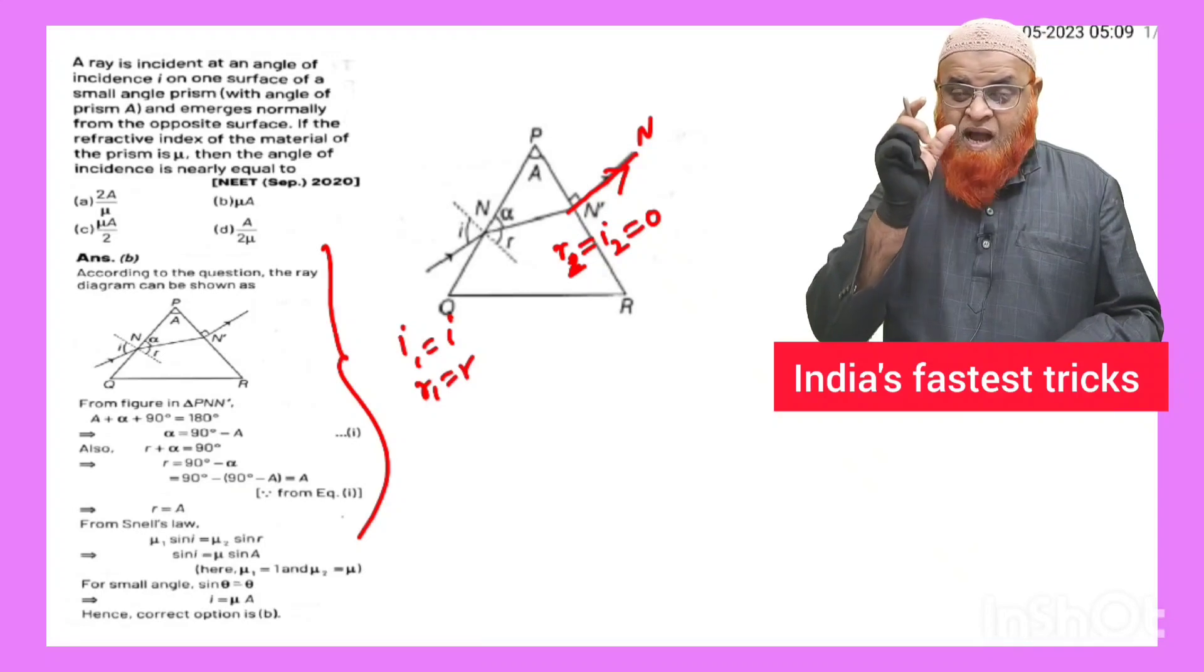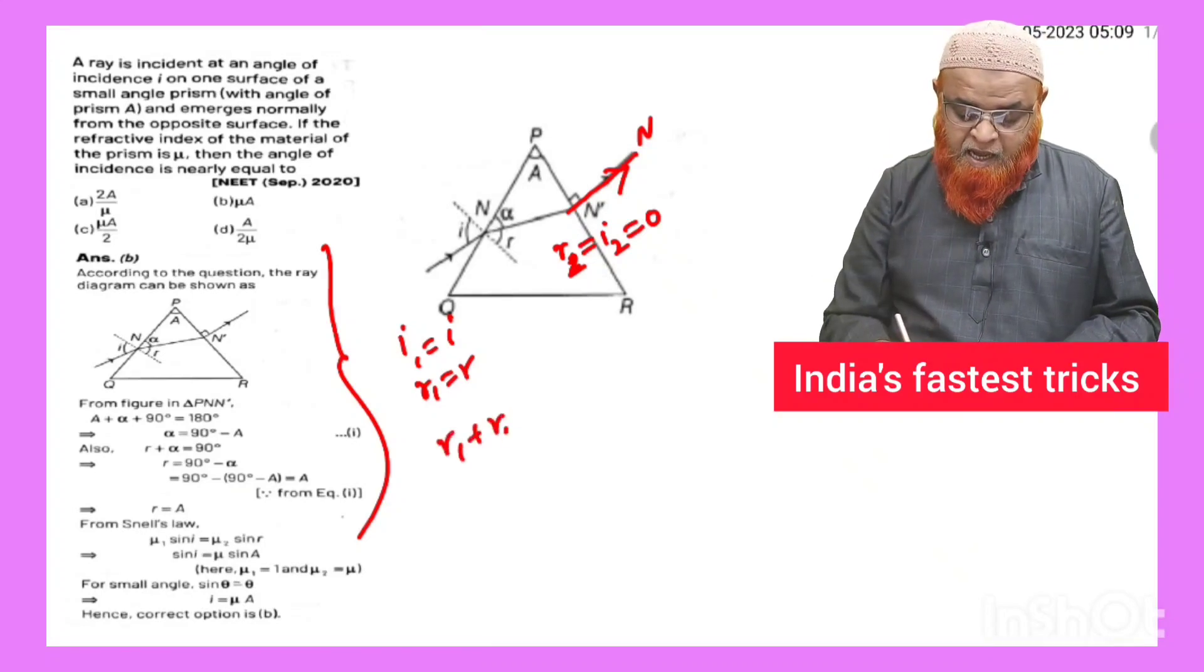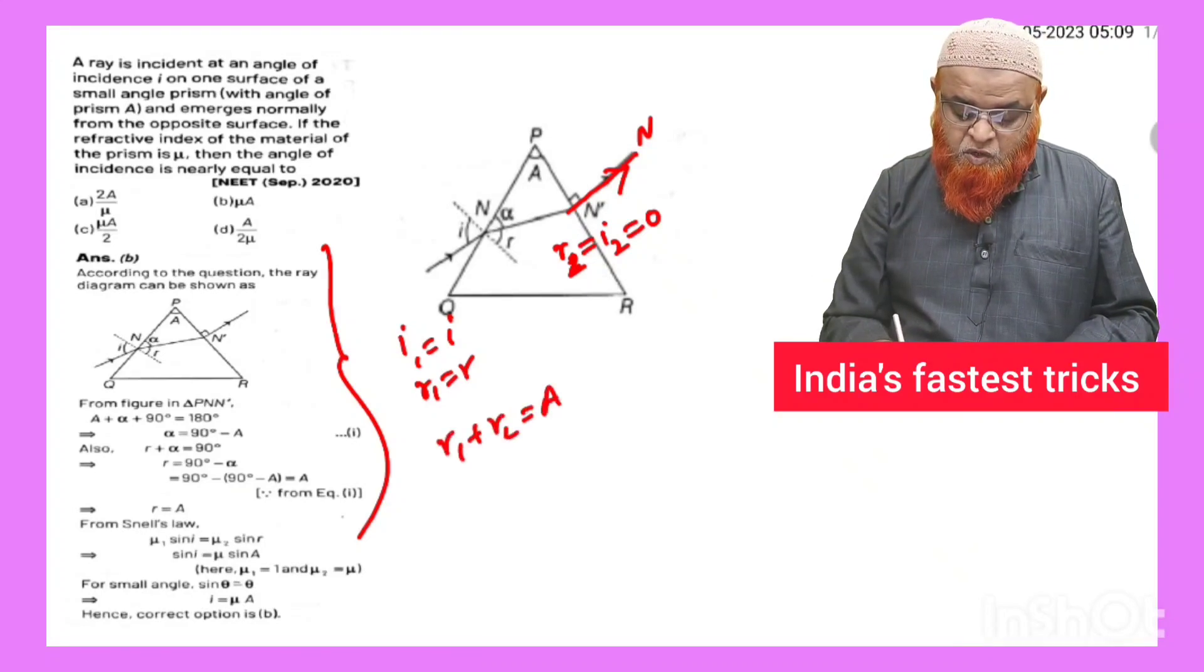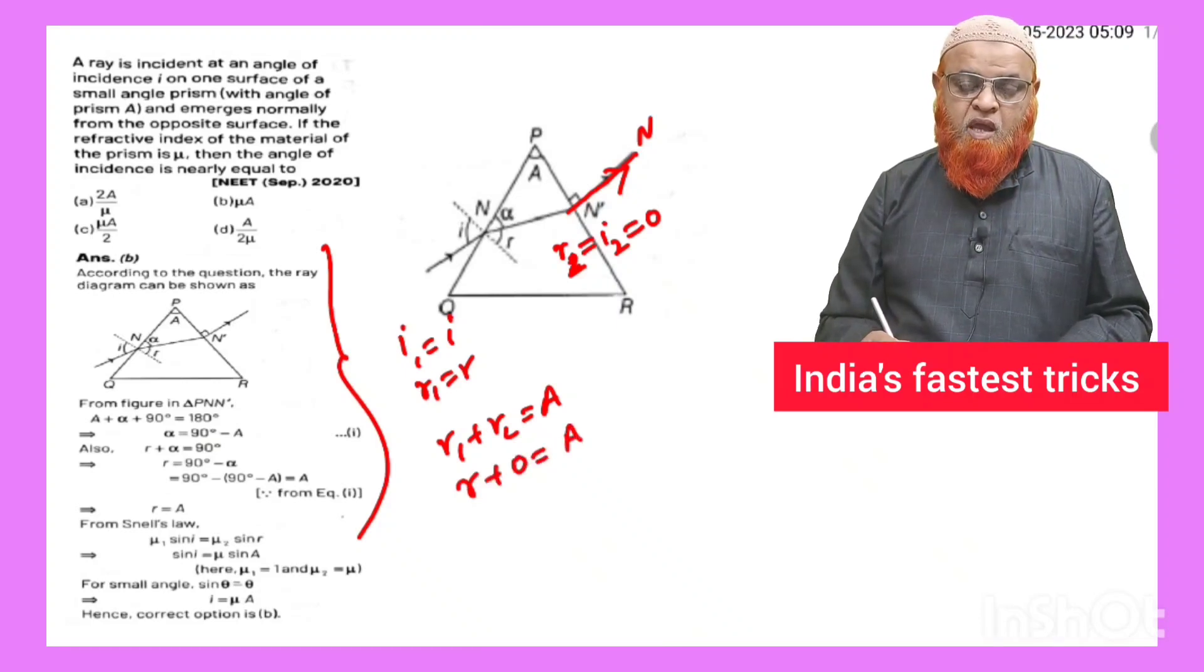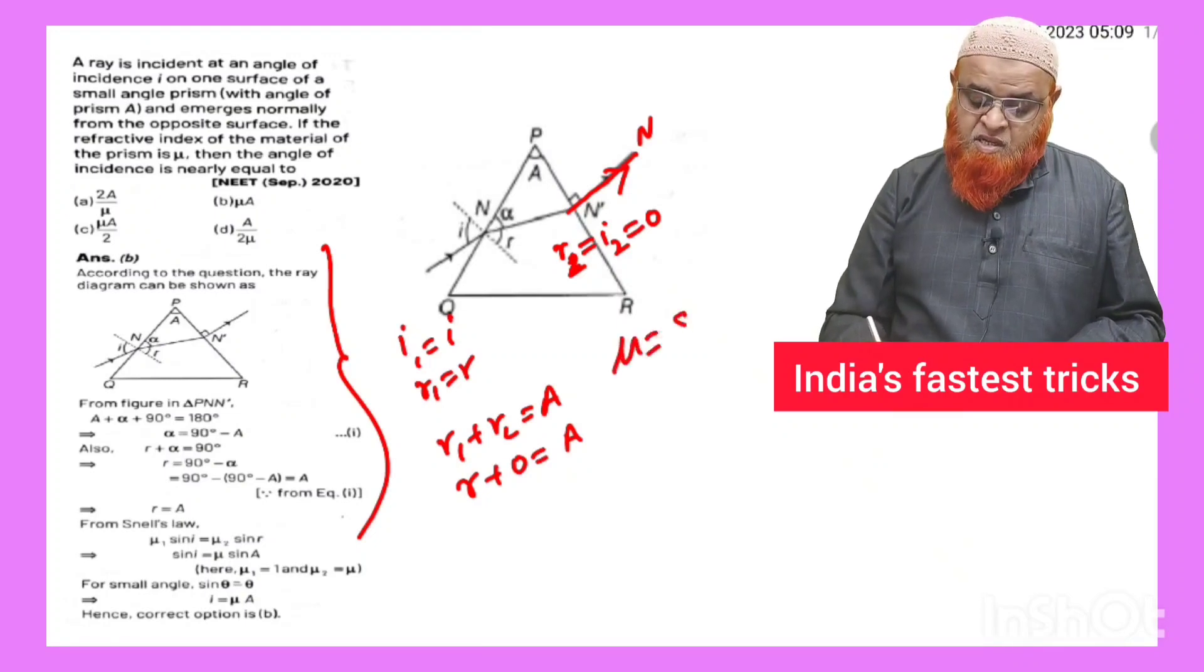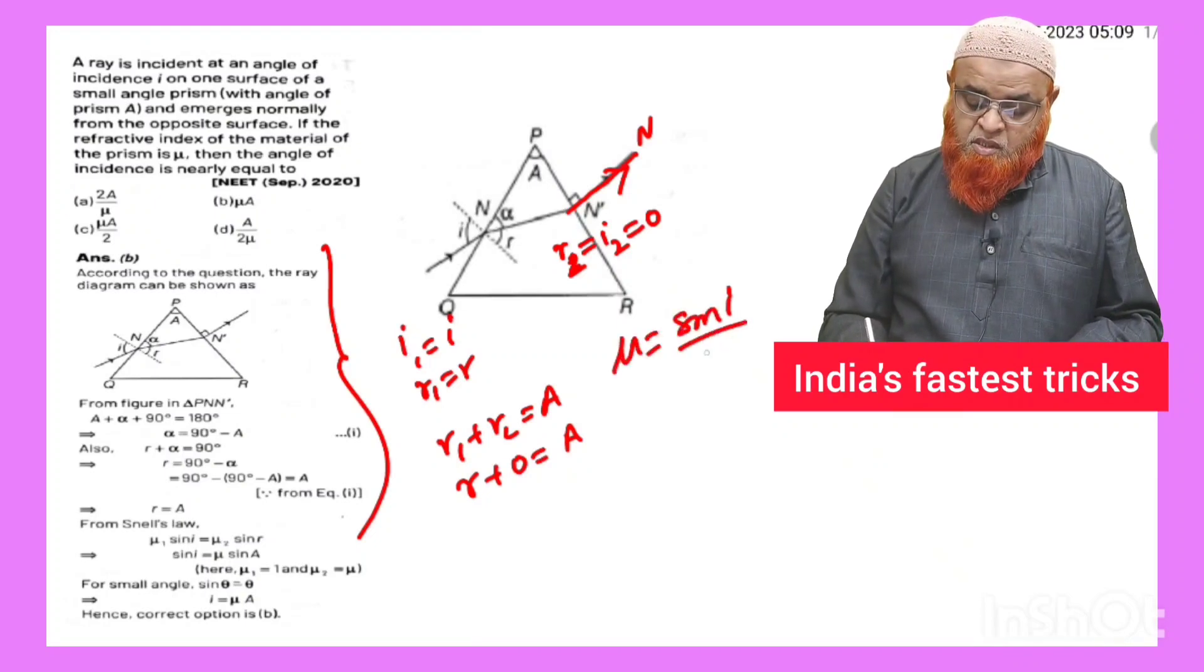Then we can write here - you all know that there is one identity in the prism: r1 plus r2 is equal to a. R1 means r, r2 is 0, this is a. You all know that mu is equal to sin i by sin r.